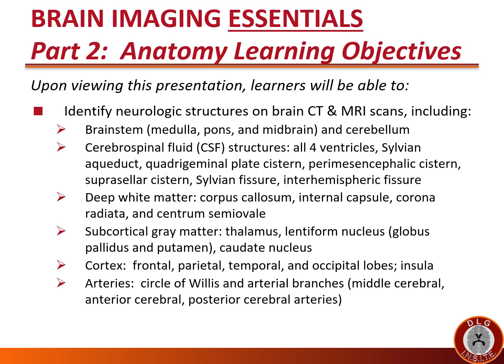The learning objectives for Brain Imaging Essentials Part 2 Anatomy are: upon viewing this presentation, learners will be able to identify neurologic structures on brain CT and MRI scans, including the brainstem with its three components — medulla, pons, and midbrain — and cerebellum.